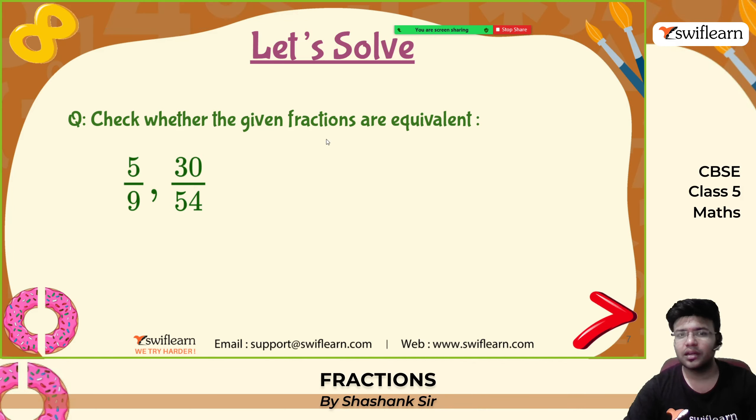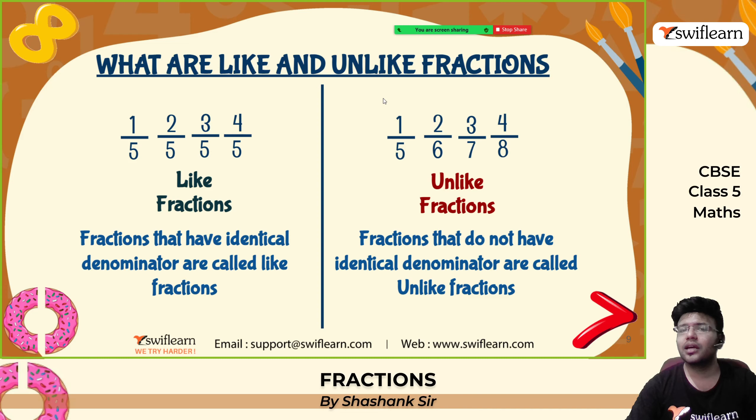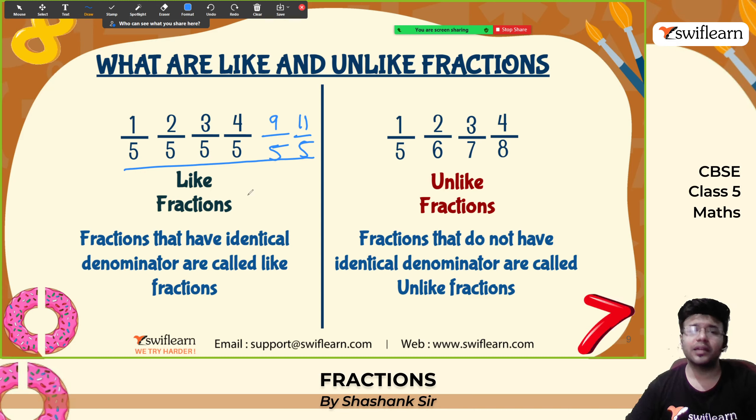Now let us move to the topic of like and unlike fractions. What are like fractions? Here we have fractions 1 by 5, 2 by 5, 3 by 5, 4 by 5. Can you see the denominators are the same? Adding more examples: 9 by 5, 11 by 5 — all the denominators are same. Two or more fractions where the denominators are the same are called like fractions.